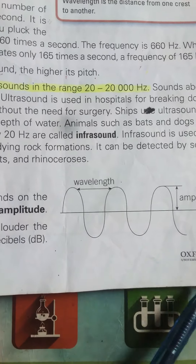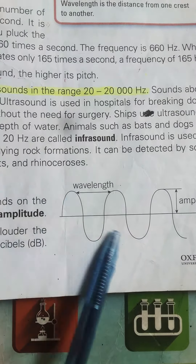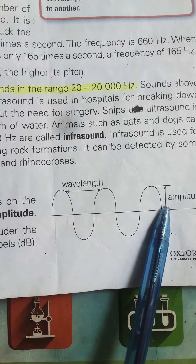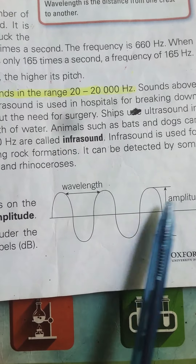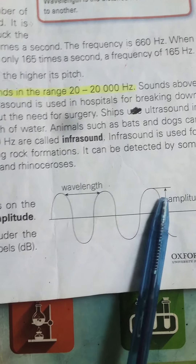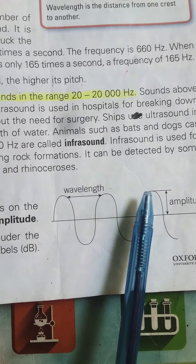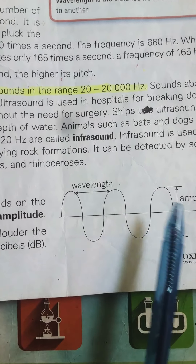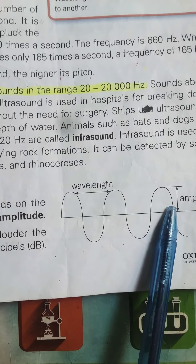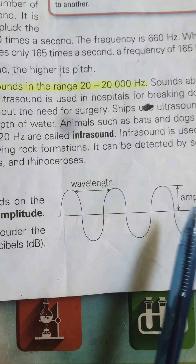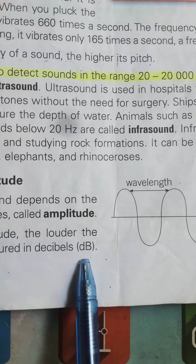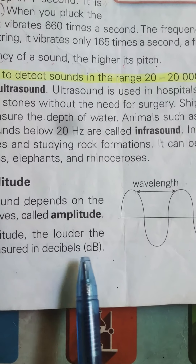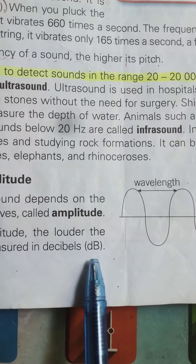The amplitude is the distance from a crest to the middle line. The loudness of sound is related to amplitude. If the sound is very loud, its amplitude will also be very high. The greater the amplitude, the louder the sound. Loudness can be measured using the unit decibel, represented by the formula dB — lowercase 'd' and capital 'B'.